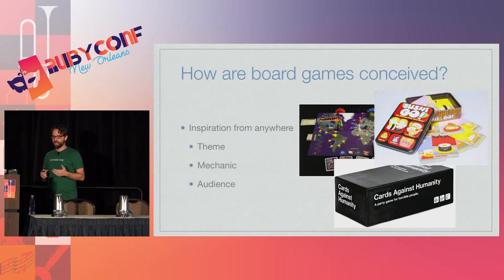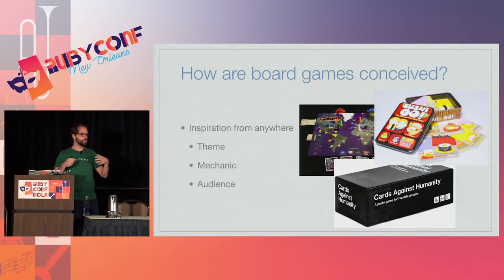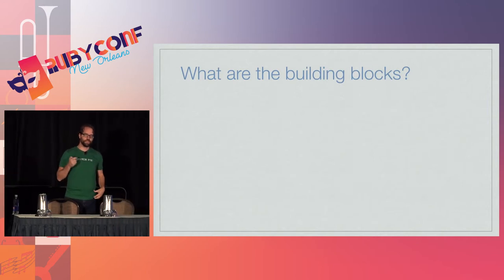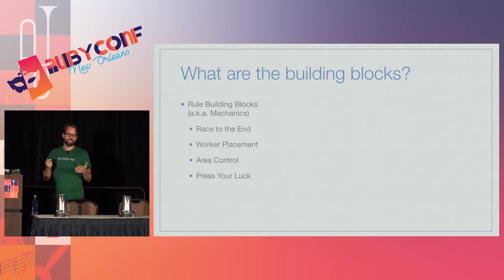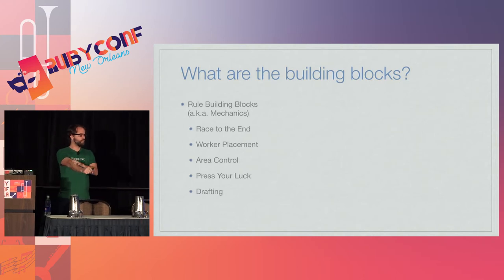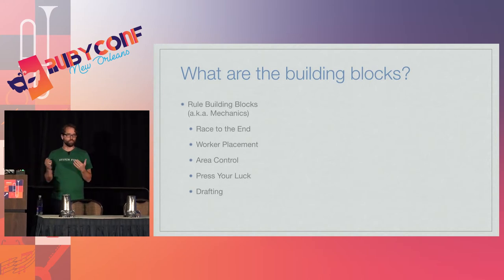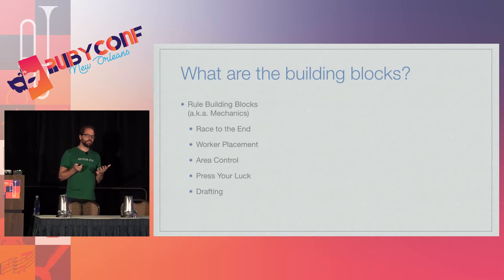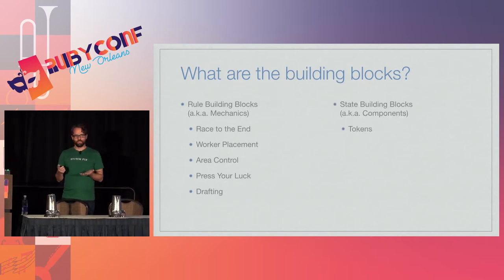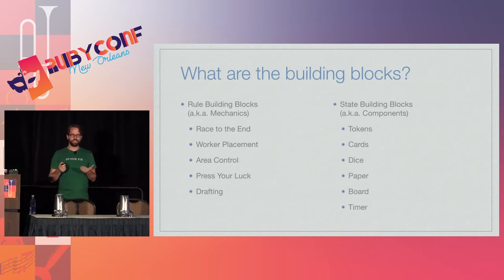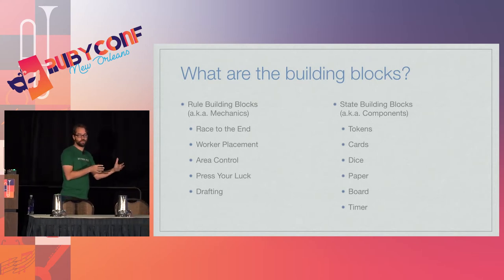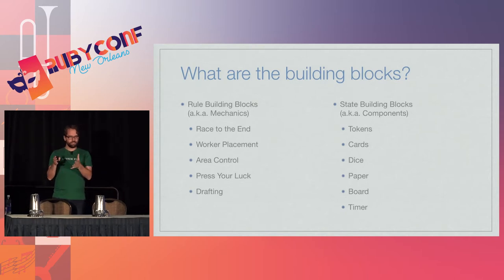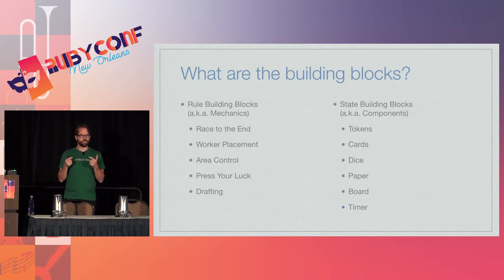So you can find inspiration from anywhere. And once you have inspiration, you really just need some building blocks to put together. There are two different kinds: there's the rule building block — the mechanics — and Oregon Geek lists over 50 different types. You also need things to represent states, which are just the components. What you'll notice about all these different components is that they're really simple — things you probably have around your house.